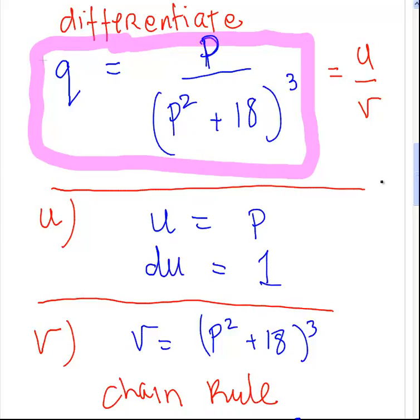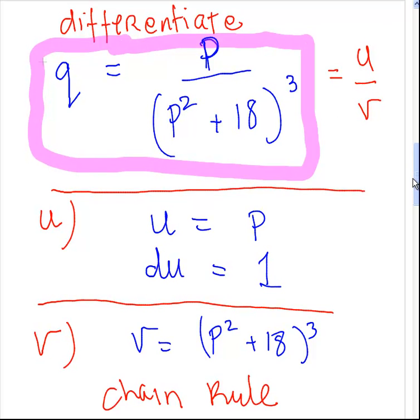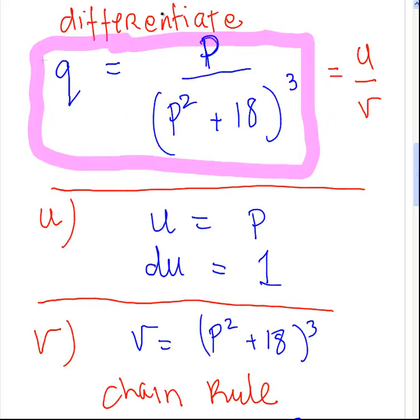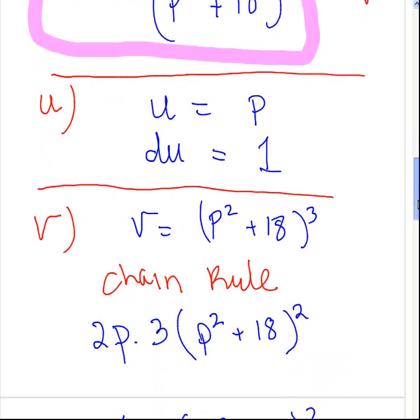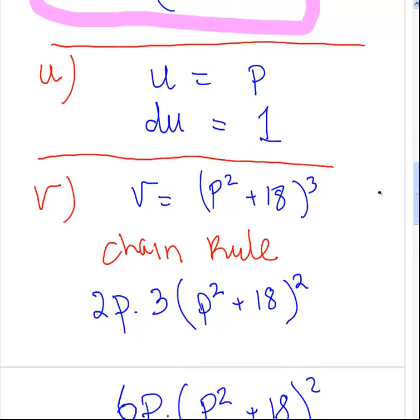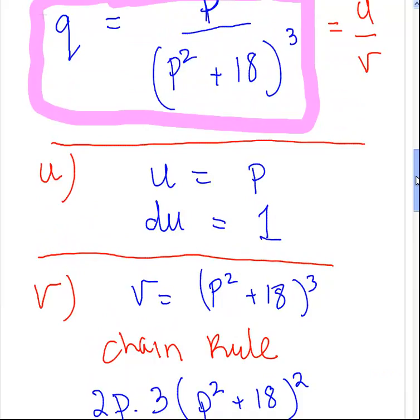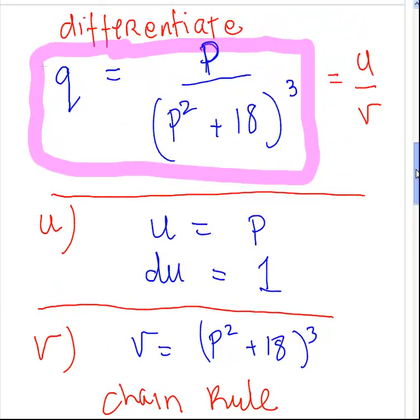So I'm going to look at the numerator first. U equals P, and the derivative dU/dP — we'll just call it dU — that is equal to 1.